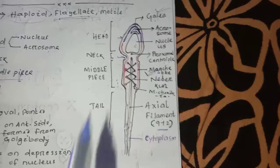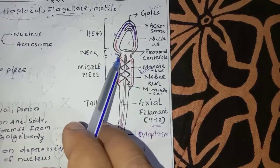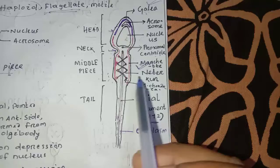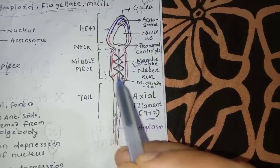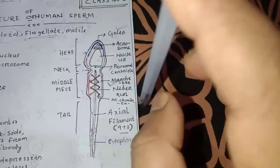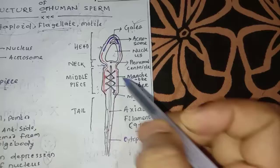The middle piece is connected to the neck, which is a very small constriction. The middle piece contains mitochondria arranged in a zigzag manner. The axial filament runs through it in a rounded and spiral arrangement, forming a spiral structure.